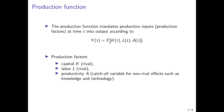Typically, firms have production factors at their disposal: physical capital, denoted by K, and labor, denoted by L. These two production factors are rival, meaning that if one firm uses them, another firm cannot use them at the same time.